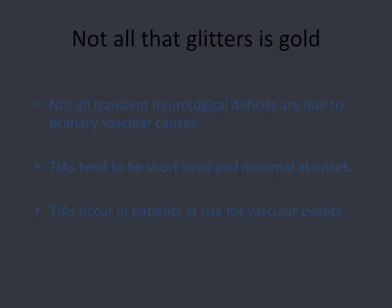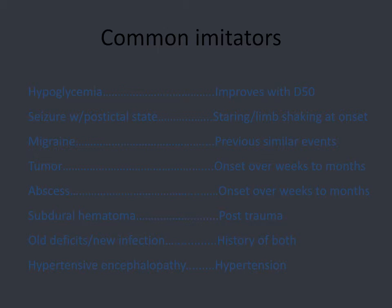Not all neurologic deficits, especially transient ones, are due to primary vascular causes — the differential should always include mimics. Vascular events tend to be maximal at onset and occur in patients with risk factors. Common mimics include: hypoglycemia, which can produce focal deficits that look exactly like stroke but improve with D50; focal seizures, which start with limb shaking and staring but whose following Todd's paralysis and eye deviation can look like stroke; migraine with aura, which is always on the differential — though the population differs, e.g., a 30-year-old woman with headache history versus a 65-year-old man with hypertension, hyperlipidemia, and coronary artery disease; and tumors, abscesses, and subdural hematomas, which typically have a different time course but similar symptoms.